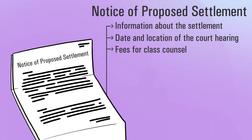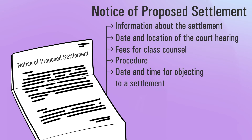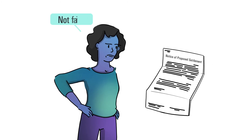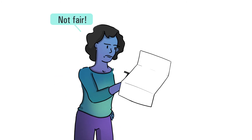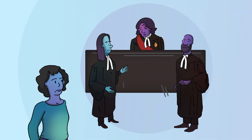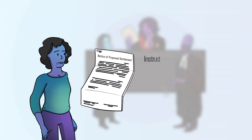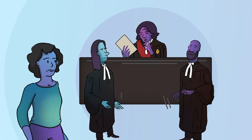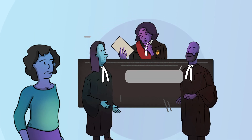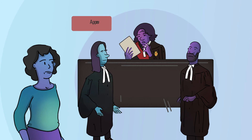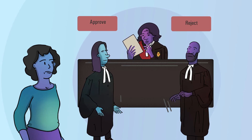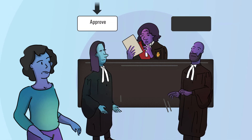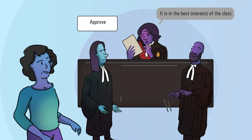A notice of proposed settlement includes information about the settlement, the date and location of the court hearing to approve the settlement, and fees for class counsel. The notice will also include the procedure, date, and time for objecting to a settlement. If Anita does not think a proposed settlement is fair, she has the right to object to it. She can object in writing or by appearing at the settlement approval hearing. Specific instructions on how to object are provided in the notice of proposed settlement. At the settlement approval hearing, the lawyers explain why the proposed settlement is a good deal. A judge can either approve or reject a proposed settlement. But even if a class member objects, the judge can still approve a settlement if they conclude it is in the best interests of the class.